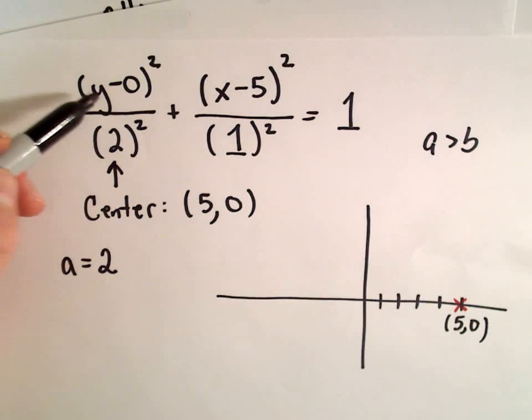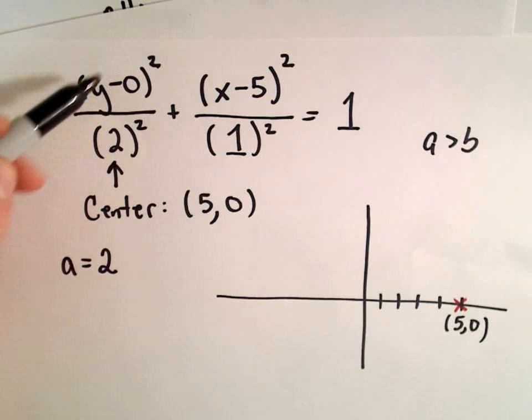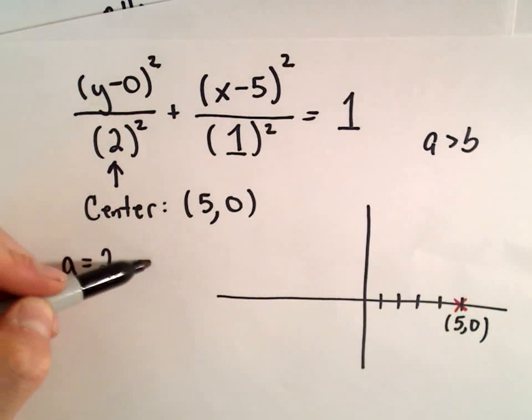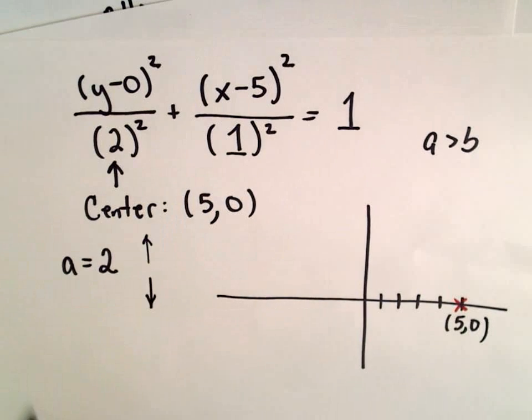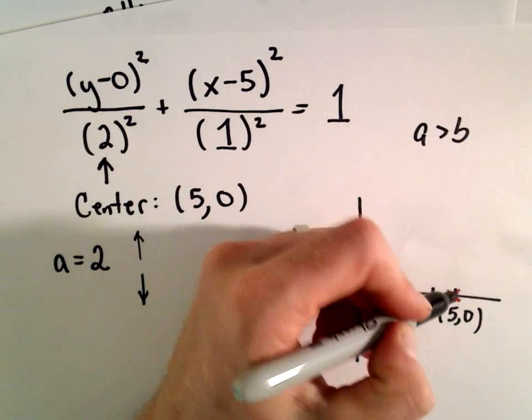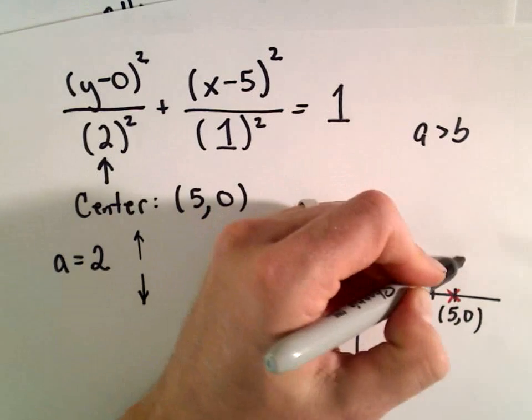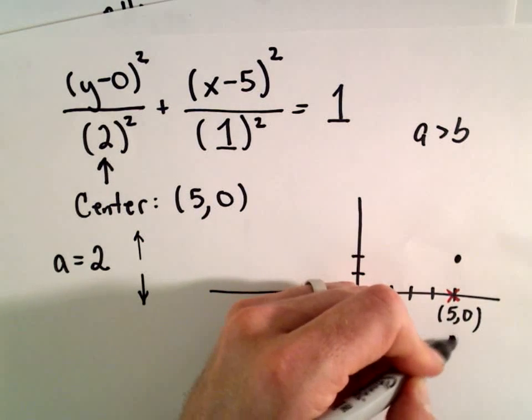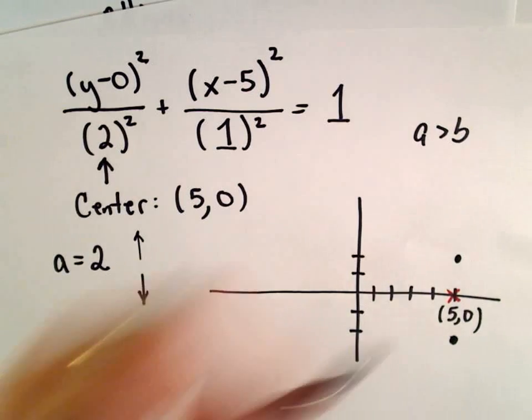That's underneath the y squared term, the term that involves y squared. That tells me how many units we go up and down from our center. So I'm going to go up 1, 2 units. And then I'm going to go down 1, 2 units. And those will give us the vertices of our ellipse.